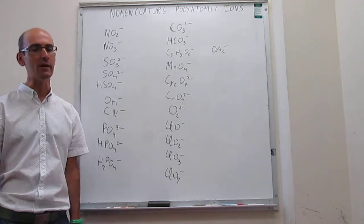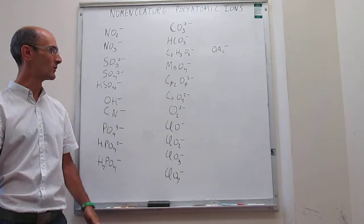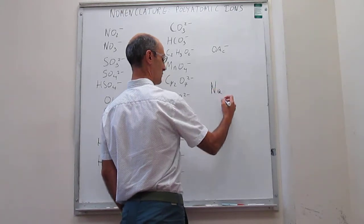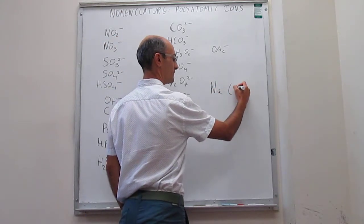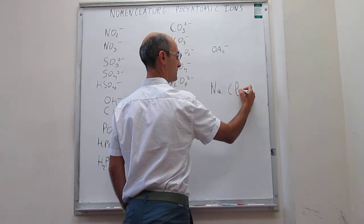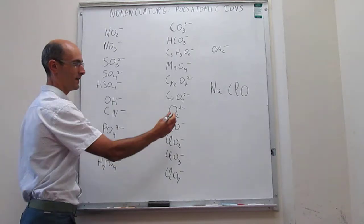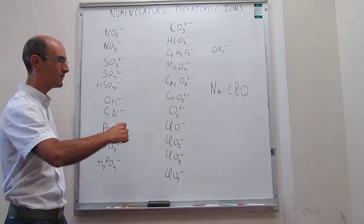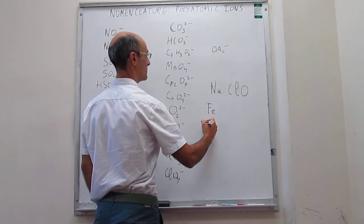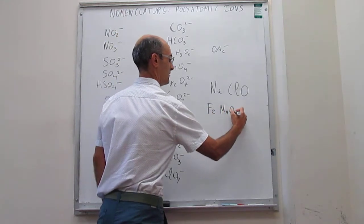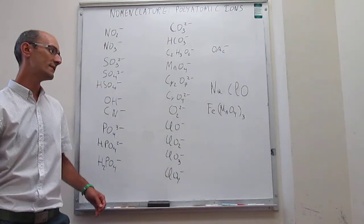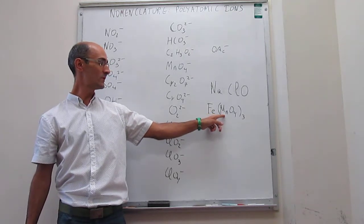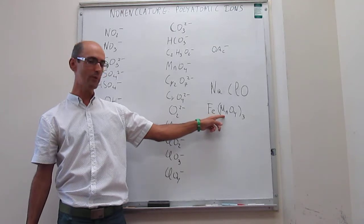So then how do we actually use these names now in order to name some compounds? For example, the compound of sodium with hypochlorite would be something like this: NaClO. And the name this compound has will be sodium hypochlorite. We can continue to name compounds here. For example, if we write this compound Fe(MnO4)3, we recognize right away that this is a binary ionic compound between iron and permanganate. So that will be iron(III) permanganate.